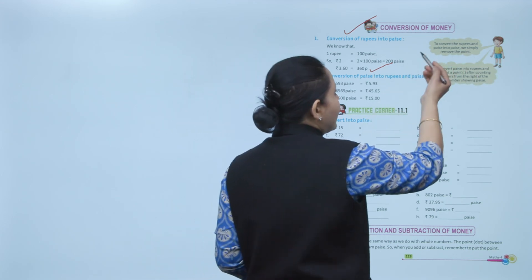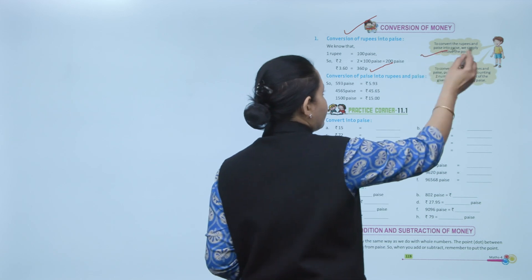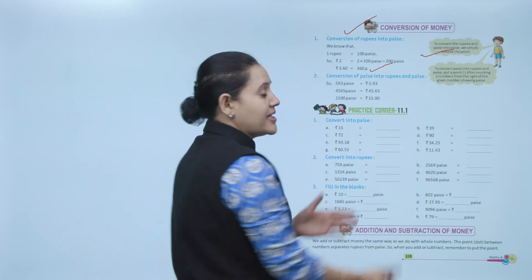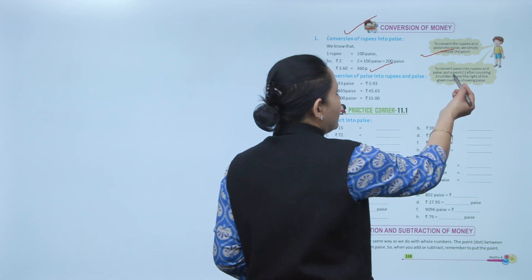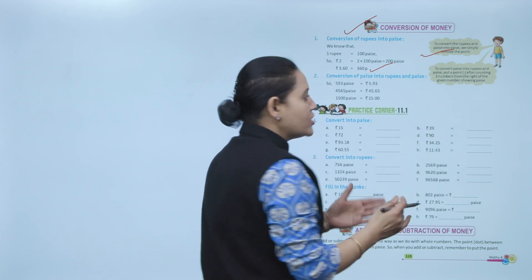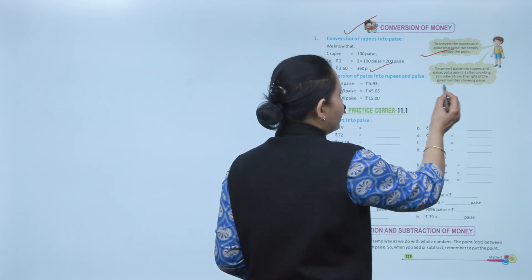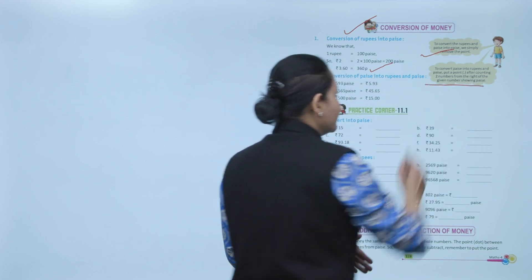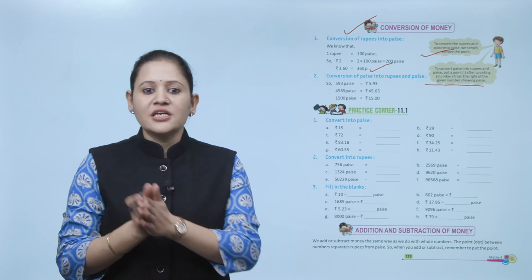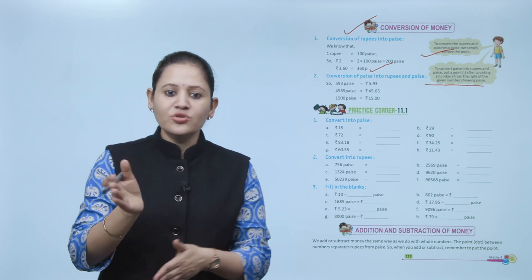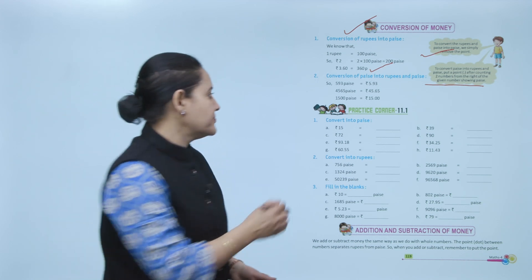To convert rupees and paisa into paisa, we simply remove the decimal point. And to convert paisa into rupees, we put a decimal point after counting two digits from the right-hand side. This is how we convert rupees into paisa and paisa into rupees. Next is conversion of paisa into rupees and paisa.